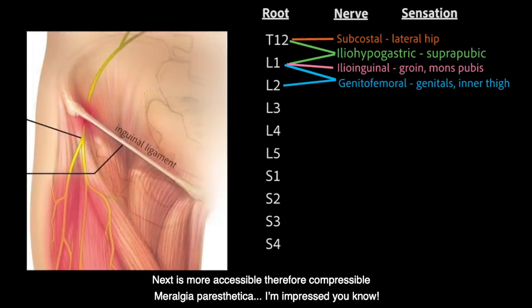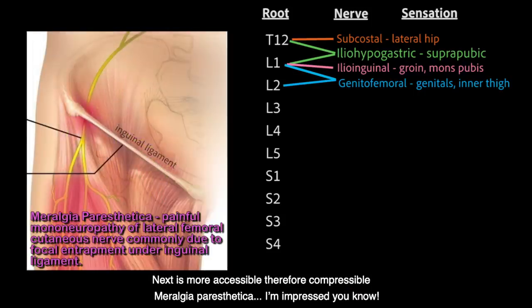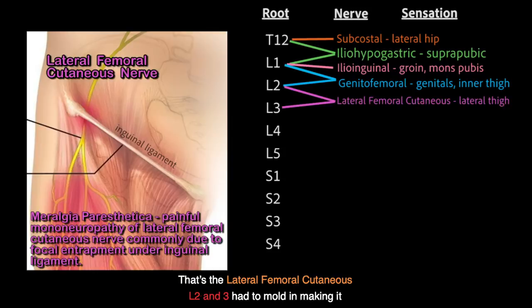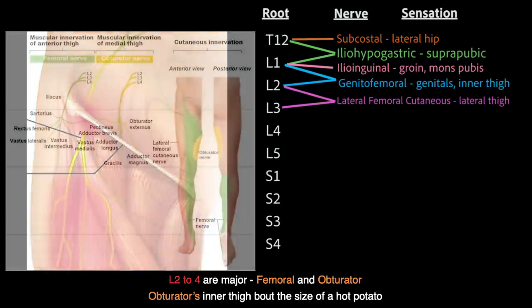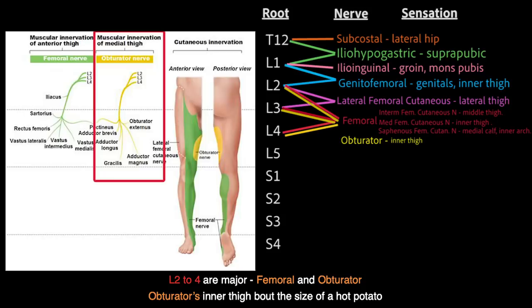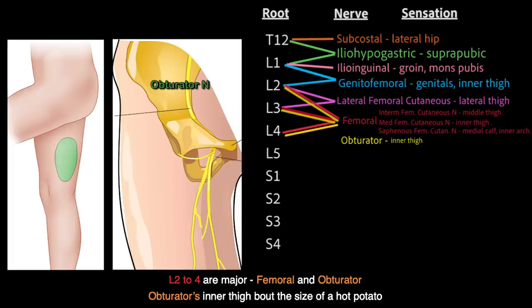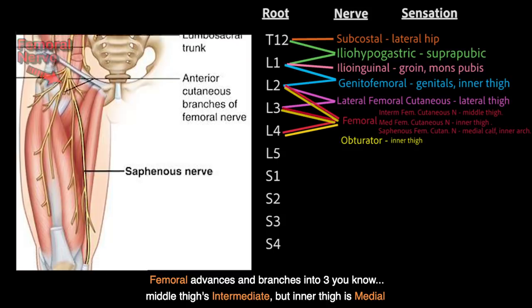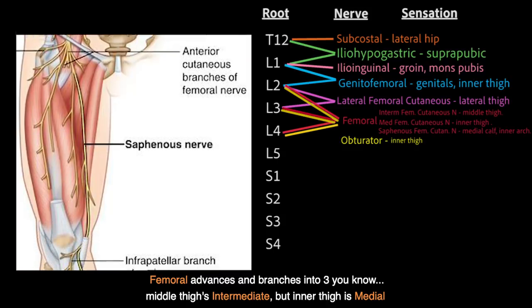Therefore compressible. Meralgia paresthetica? The lateral femoral cutaneous: L2 and 3 — had a role in making it. L2 to 4 are major: femoral and obturator.